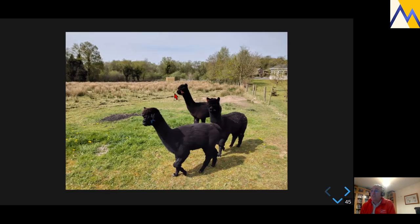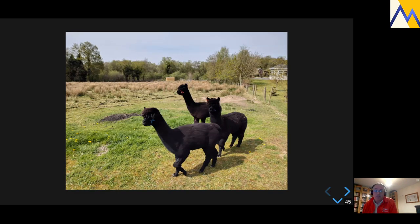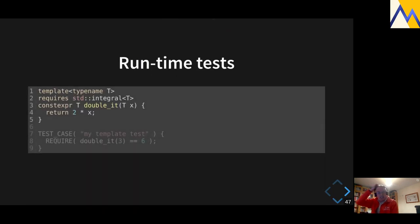Moving on to testing. The simplest tests: you can still do runtime tests of your template code, just like normal. I'm using Catch2 here and I have a function template 'double_it' that takes any integral type — I've specified the C++20 concept stuff. I can write my test case and say 'REQUIRE(double_it(3) == 6)' and that should pass.